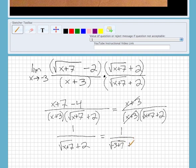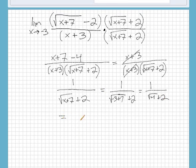So that'll be 1 over the square root of 4 plus 2. And then if we go one more step, that'll be 1 over 2 plus 2, which is 1 over 4.